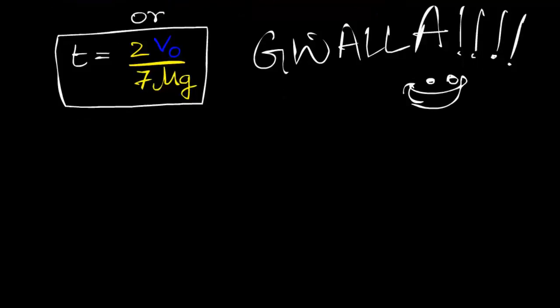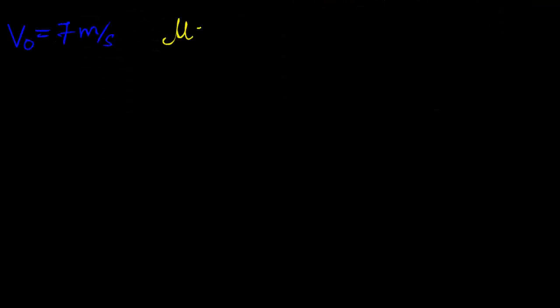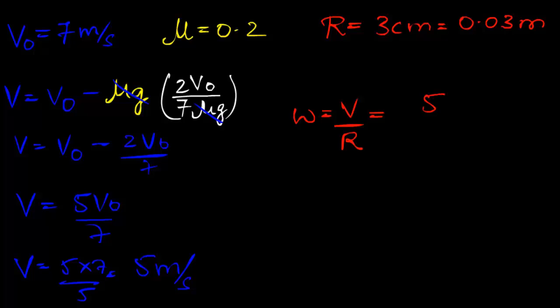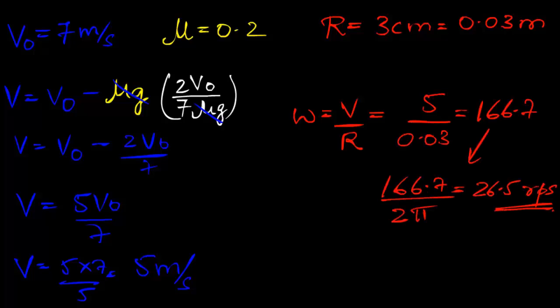By substituting some typical values, we get the final speed during the pure roll to be 5 meters per second, making about 26 and a half rotations per second. And the time to achieve this would be about one second.